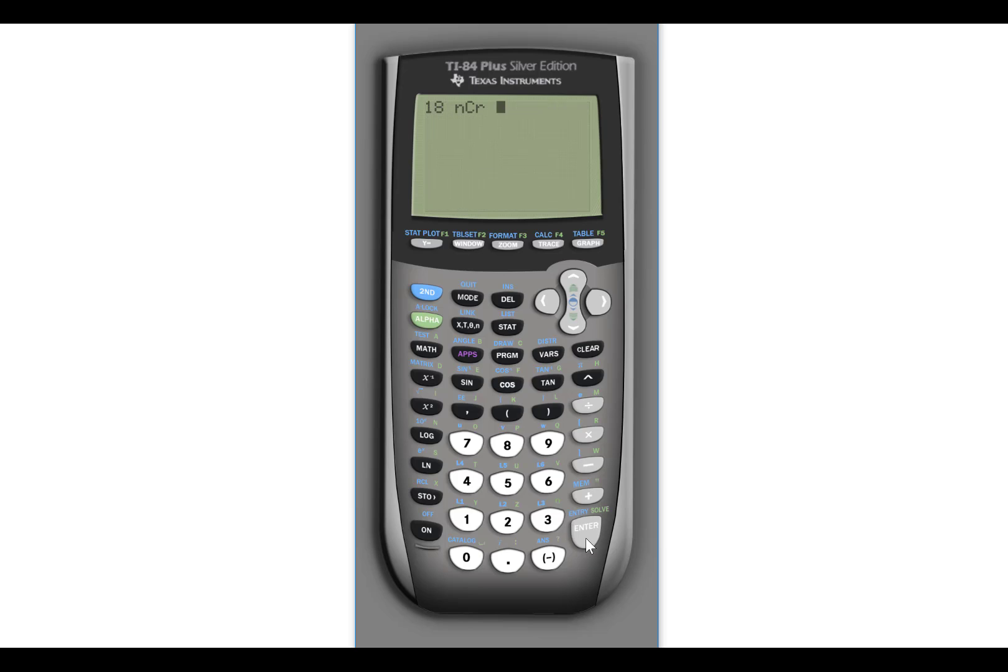And then put the number of items that you're choosing at a time. So in this example it was 6. Press enter. It will calculate the combination for you running through the formula.